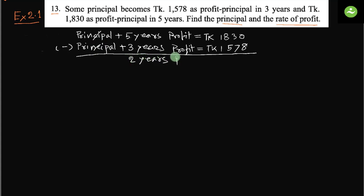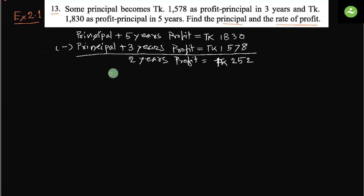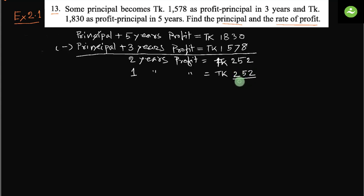Two years profit equals taka 252. From here we can find one year's profit. One year's profit equals taka 252 divided by 2, which gives us 126 taka. So five years profit will be calculated from this.